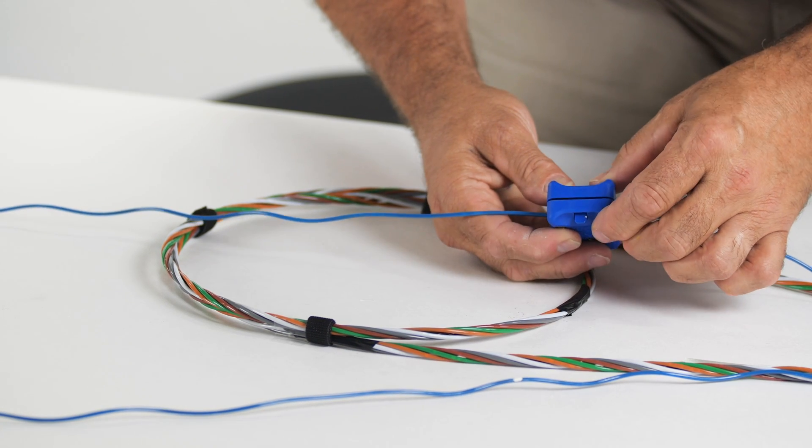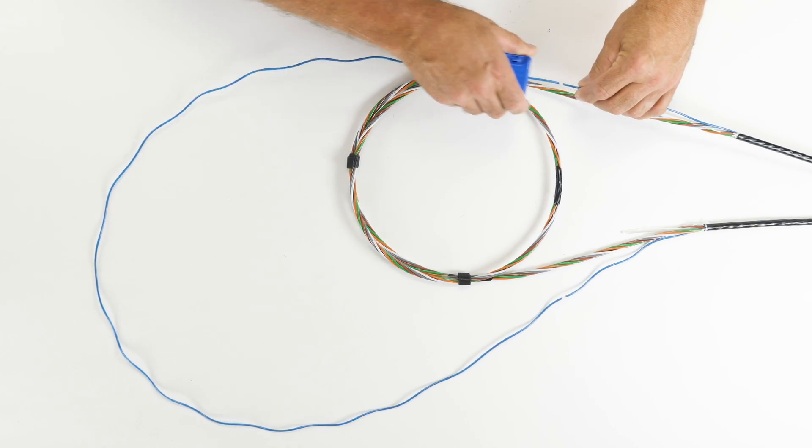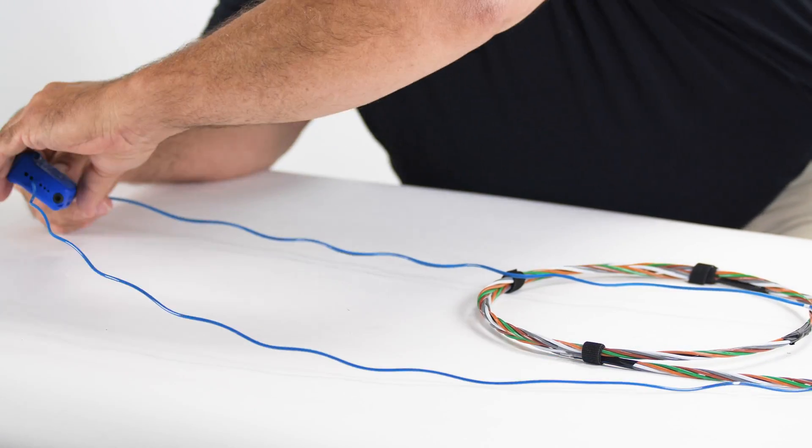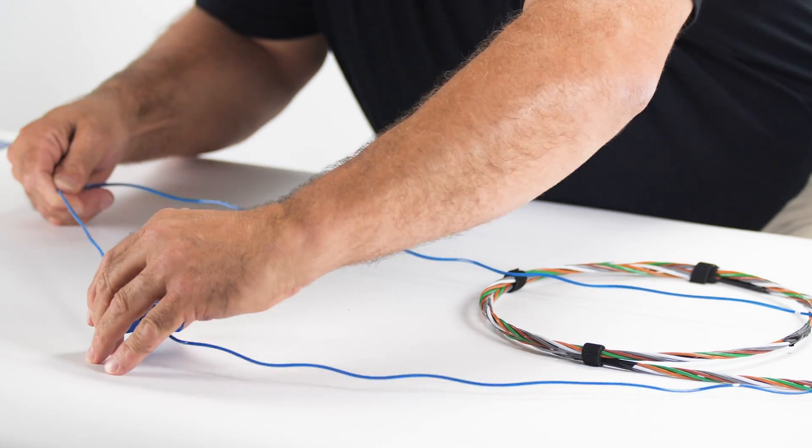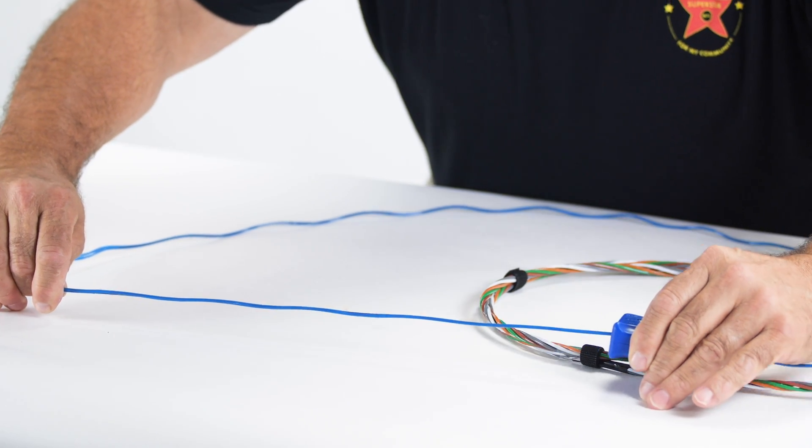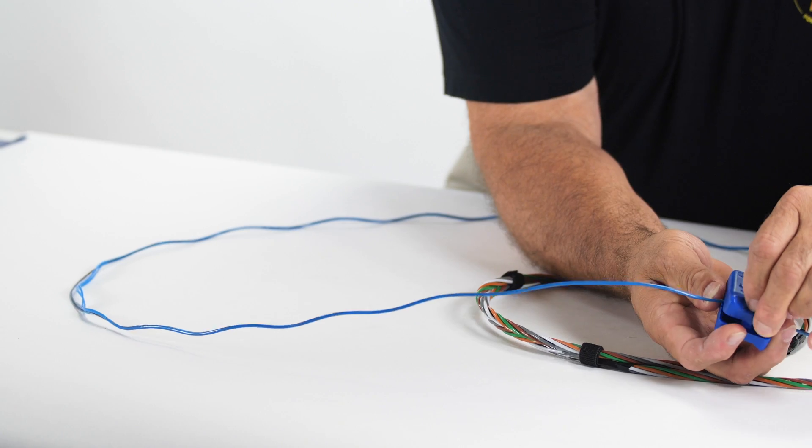Slowly pull the slitter around the buffer tube with as few stopping points as possible. Once the slitter has reached the indicated mark, open and remove the tool from around the buffer tube.